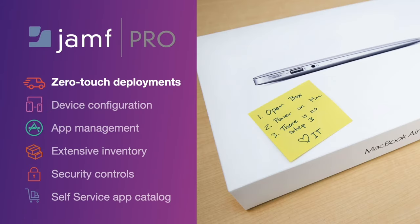We'll start with our zero-touch deployments. The Mac you see on the right is how we give new Jamf employees their Macs with three easy steps: open the box, power on, there's no step three. This same process works for Mac, iOS, and Apple TV. So let's take a look at the role of an end user and see how this goes.